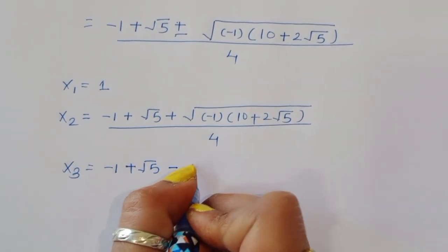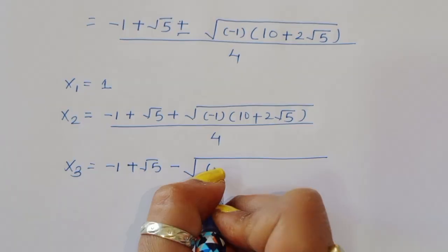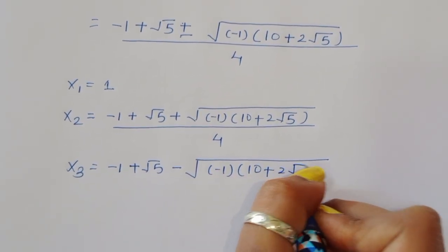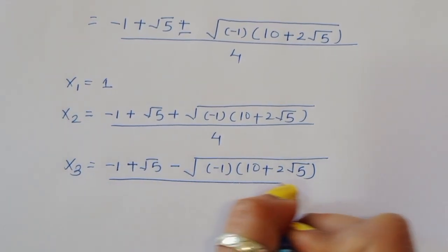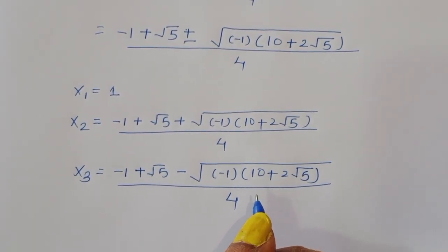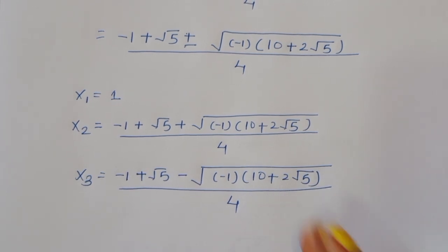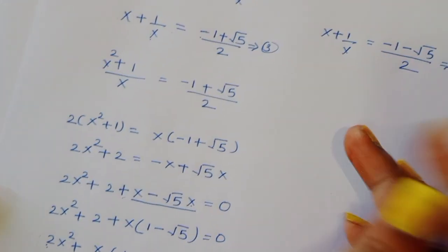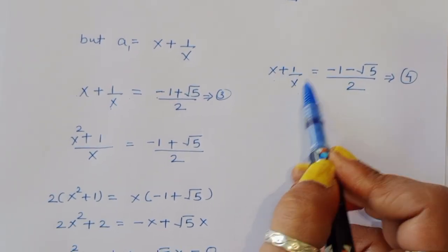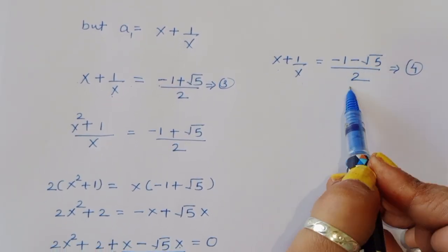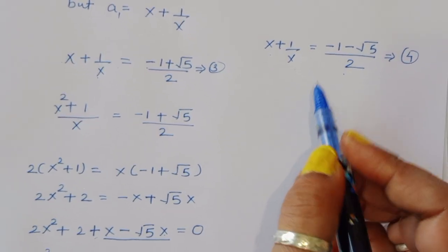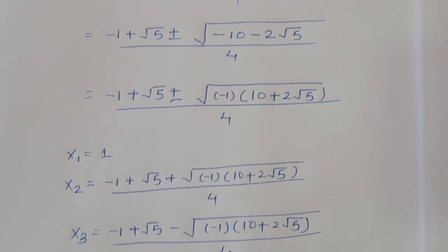Similarly, by solving equation 4 — x plus 1/x equals (minus 1 minus root 5) divided by 2 — you will get the values of x4 and x5 in the same way. These are all the solutions to x^5 minus 1 equals 0.